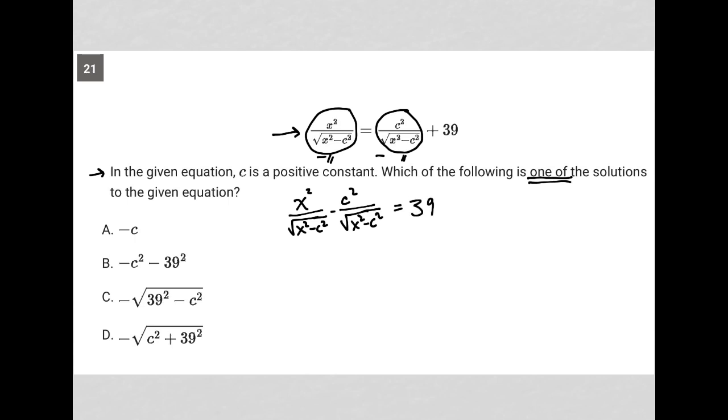I'd have x squared over that minus c squared over the exact same denominator equals 39. Because I have a common denominator on my left-hand side, I can combine that into a single fraction. Because I see that, you know, both numerator and denominator say x squared minus c squared,